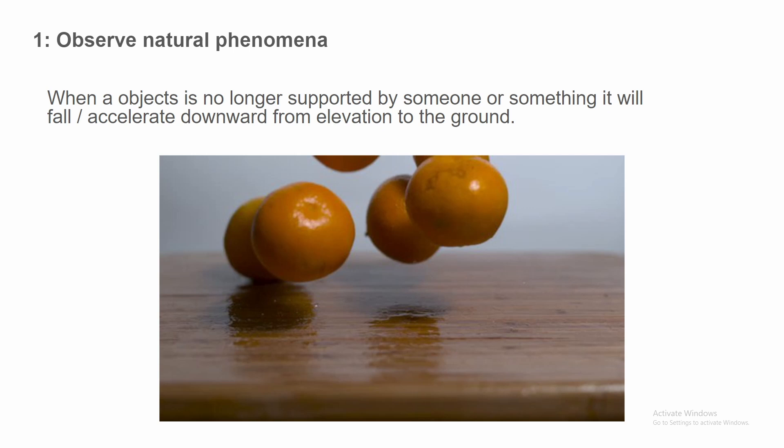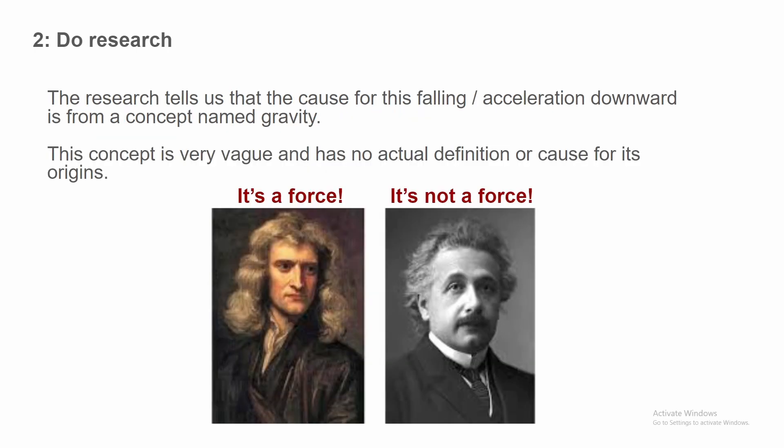Okay, let's move on to observe natural phenomena. When an object is no longer supported by someone or something, it will fall and accelerate downwards from the elevation to the ground. So this would be me picking up an orange and letting it go and it falls to the ground. This is the natural observed phenomena. Number two: We do research. What was the research based on this phenomena? The research tells us that the cause for this falling acceleration downward is from the concept named gravity. This concept is very vague and has no actual definition or cause for its origins. There are two explanations of this.